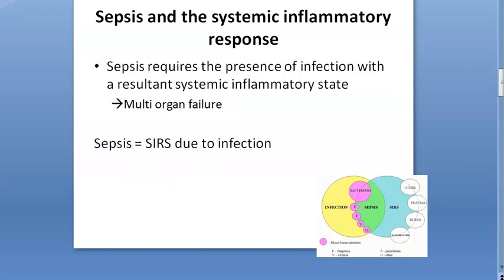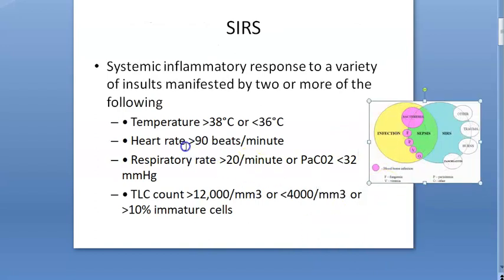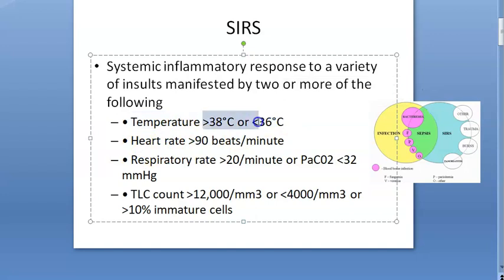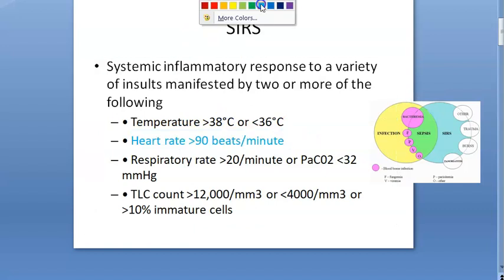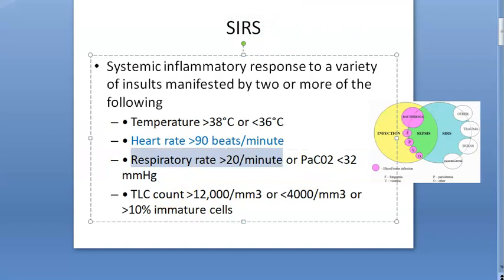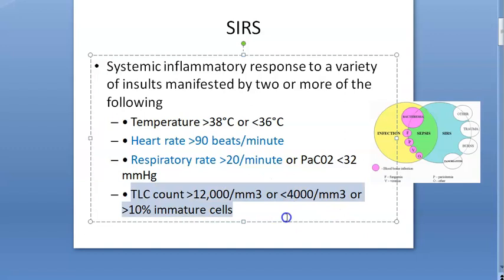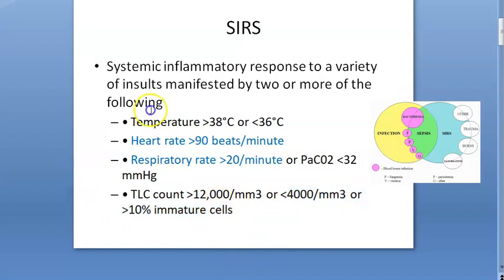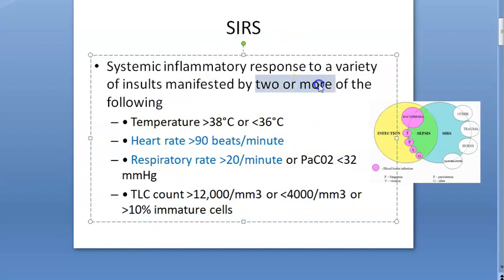SIRS can happen due to many reasons. If SIRS should be there for whatever reason, what will be present? The temperature will be more or less — hyperthermia or hypothermia. Heart rate is more — tachycardia. Respiratory rate is more — tachypnea. PaCO2, that is carbon dioxide, is less. Total leukocyte count is more or less than normal — more than 12 or less than 4. Both are abnormal. Two or more of the following should be present for it to be considered a systemic inflammatory response to a variety of insults.